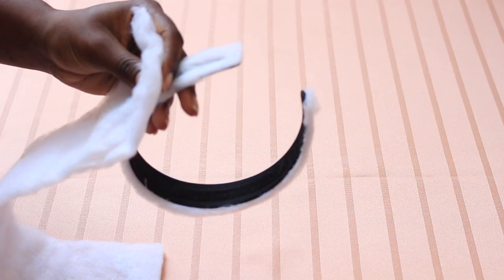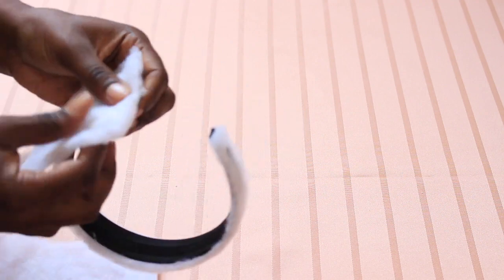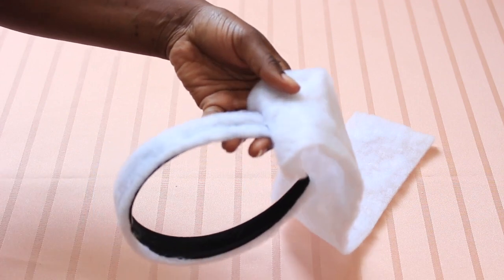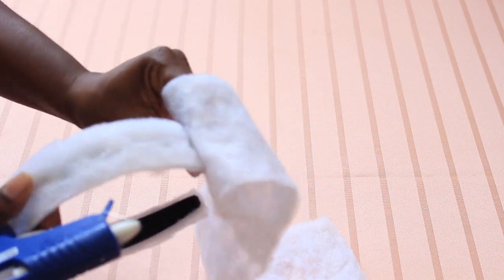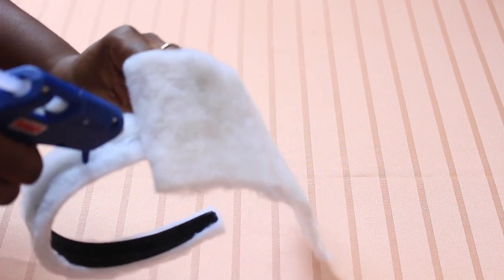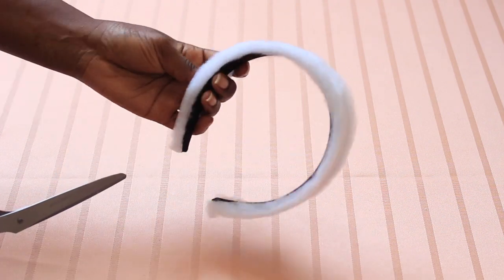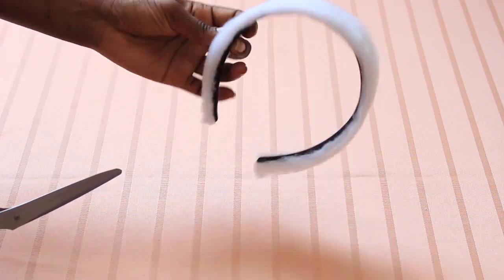Next, we're going to grab our second piece of batting and do the same thing as step one, starting with the glue at the top of the headband and then continuing to glue that second piece of batting down. Again, we're going to cut off the excess batting as we did in the first step.